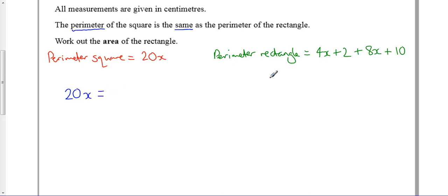The perimeter of the square, 20x, must be the same as these two added together, which is 12x plus 12. I can solve this equation now. I can take away 12x on both sides, and that gives me...